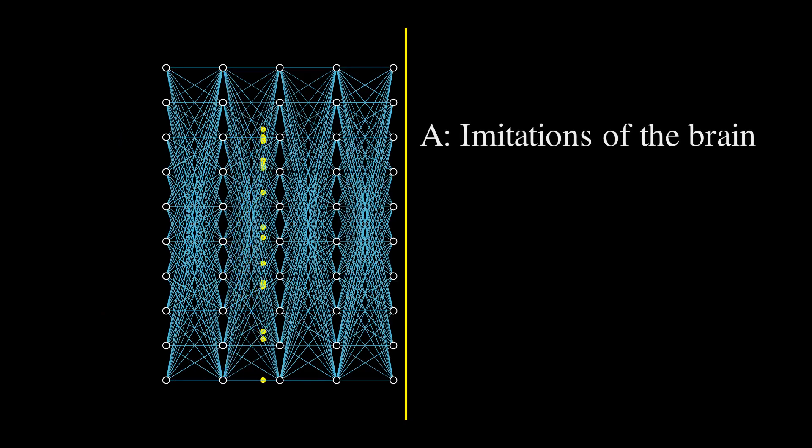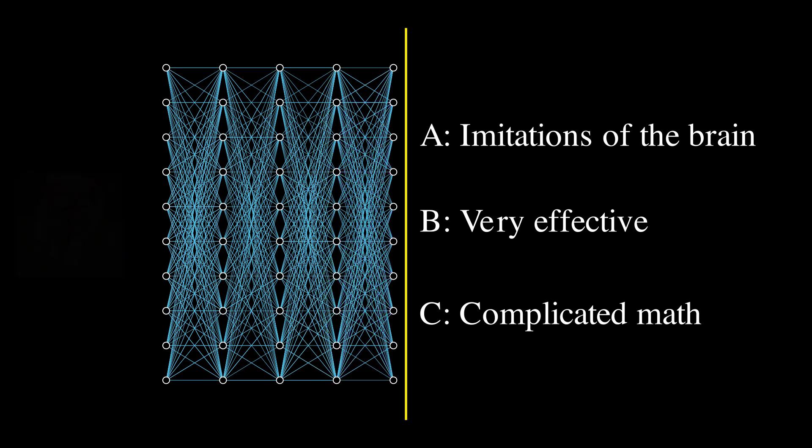When most people think of neural networks, usually one of the following comes to mind. A: They are artificial imitations of a human brain. B: That they are unreasonably effective. And C: That you need a lot of complicated math to understand them. While we can debate A and B, the last statement really doesn't have to be the case.